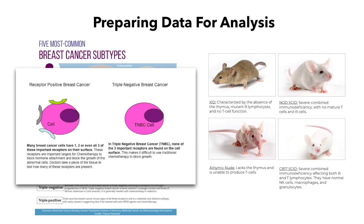XID is characterized by the absence of the thymus gland, and therefore no T cell production. This mouse also has mutant B lymphocytes. NOD SCID stands for non-obese diabetic, severe combined immunodeficiency, and mice of this type lack both mature T and B cells. Athymic nude mice are a-thymic like XID, so they do not synthesize T cells; however, unlike XID, they do not have mutated B cells. CB17 SCID mice have affected B and T cells, but they have normal amounts of natural killer cells, macrophages, as well as granulocytes.